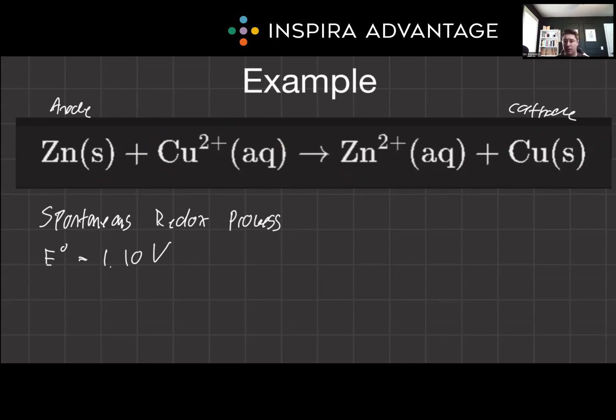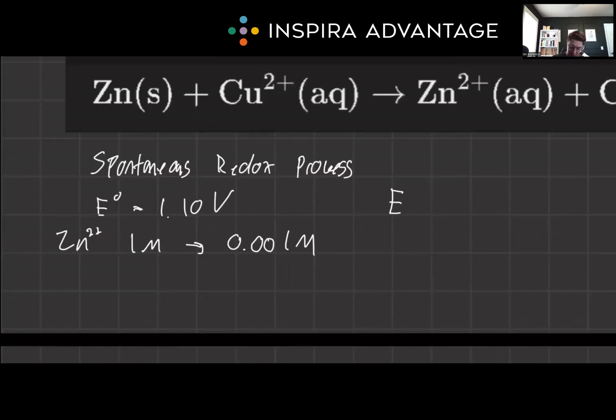So now let's apply the Nernst equation to the zinc-copper cell with the altered zinc ion concentration, reducing the concentration of zinc ions from, let's say, one molar down to 0.01. Well, let's think about what this will do in terms of our equation. So we know cell under non-standard conditions, and let's just plug in the E value right away.